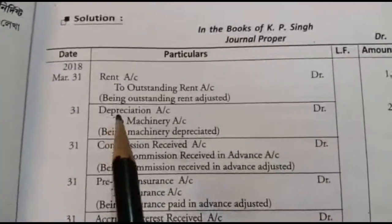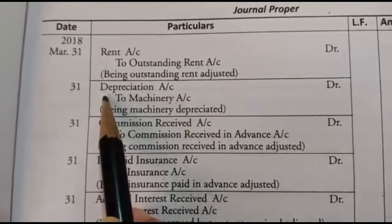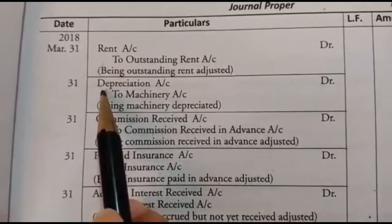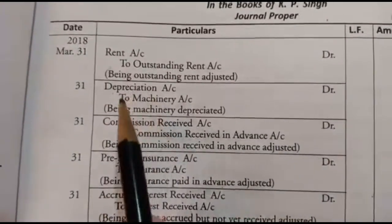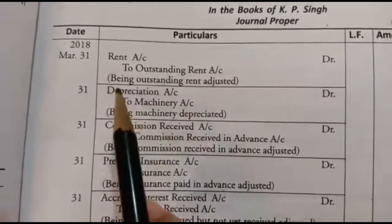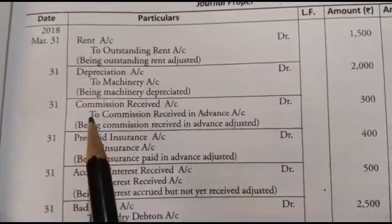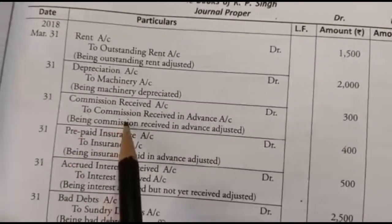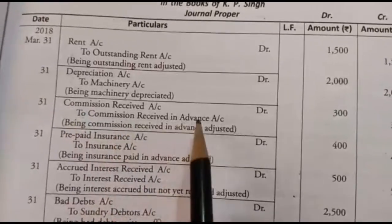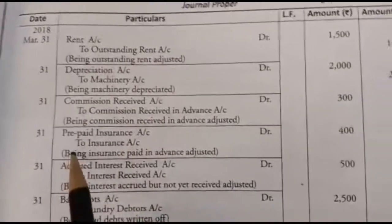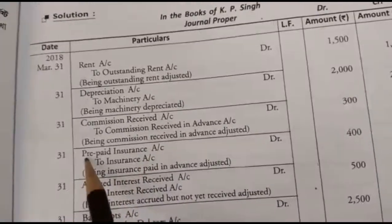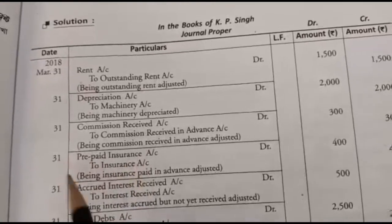What is the depreciation of machinery? The depreciation loss goes to the machinery account. The commission received in advance is a liability — it is recorded in the commission received in advance account. Prepaid insurance is also an asset: the prepaid insurance account is adjusted against the insurance account.